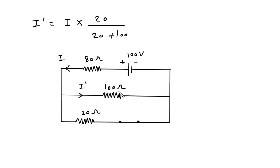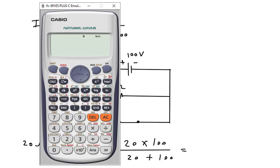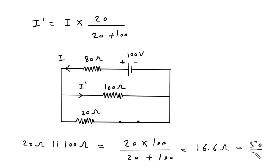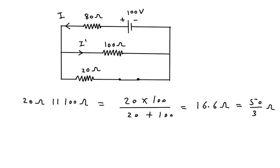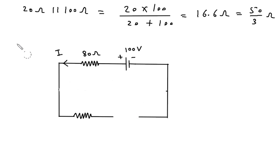We have to simplify 20 ohm parallel with 100 ohm. This will be 20 into 100 divided by 20 plus 100, which equals 16.6 ohm, or in fraction it is 50 by 3 ohm. We will replace this parallel combination with 50 by 3 ohm.